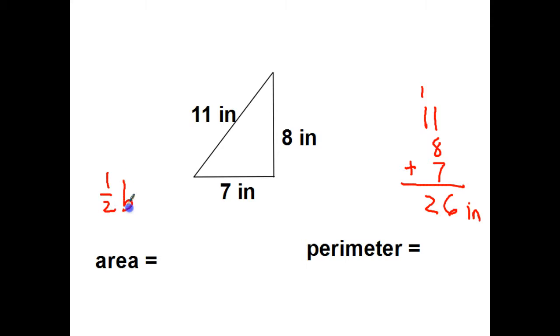Half of the base times the height. Here's the two numbers I'm using. I want to do half of the 8 is 4. 4 times 7 gets me 28 square inches.